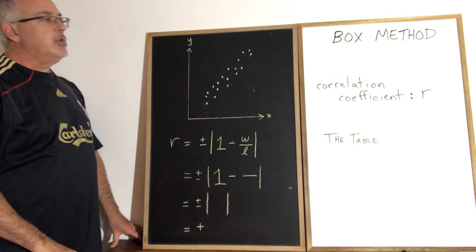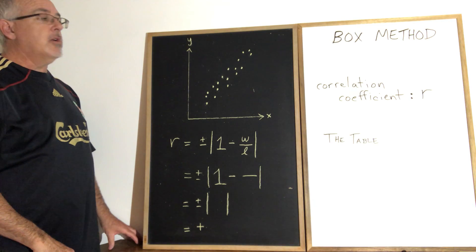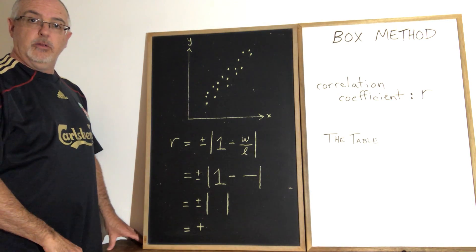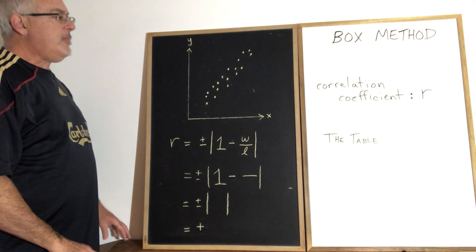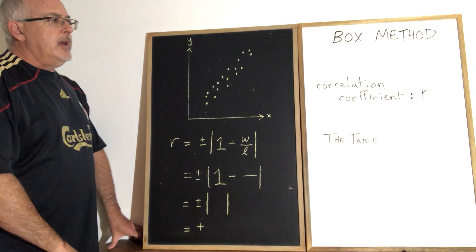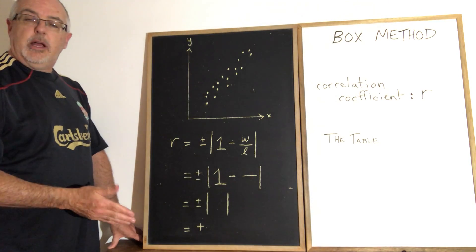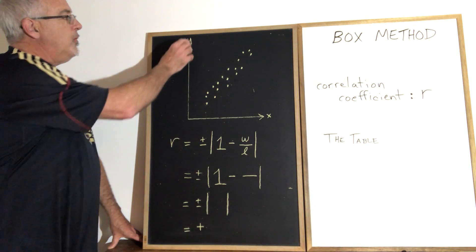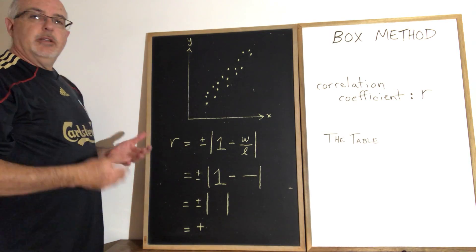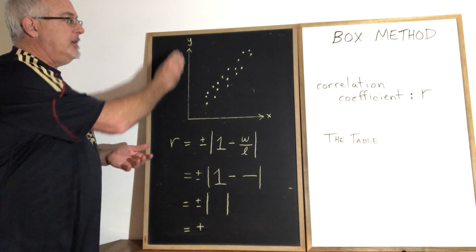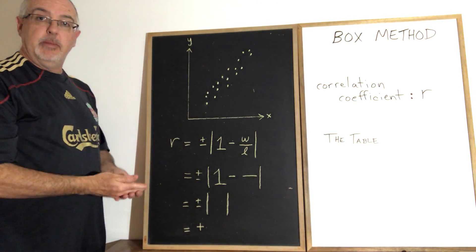Today's Daily Dose of Math is about using the box method to find the correlation coefficient, the r-value, for a scatterplot while doing statistics. The r-value allows us to judge how strong the correlation is between what we have on our y-axis and what we have on our x-axis. Correlation just means the relationship between these two things that are being measured.